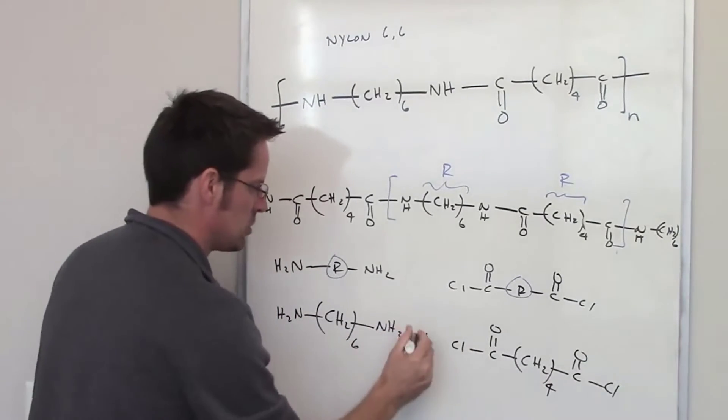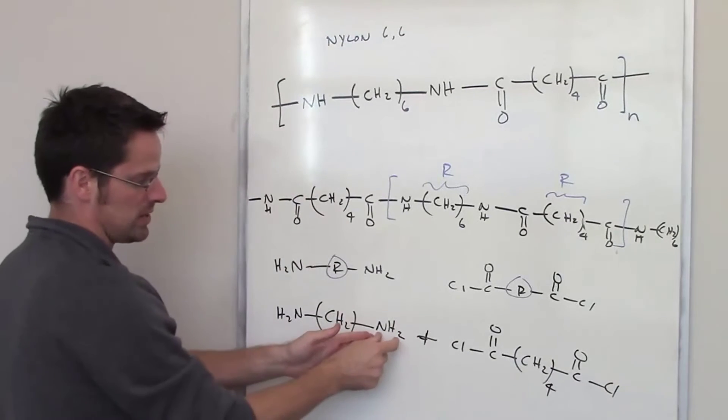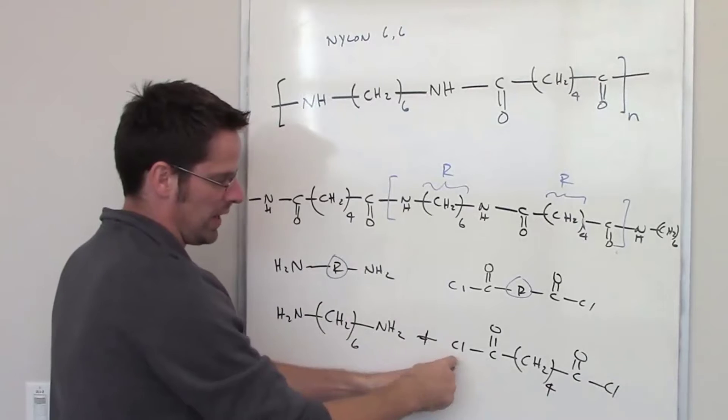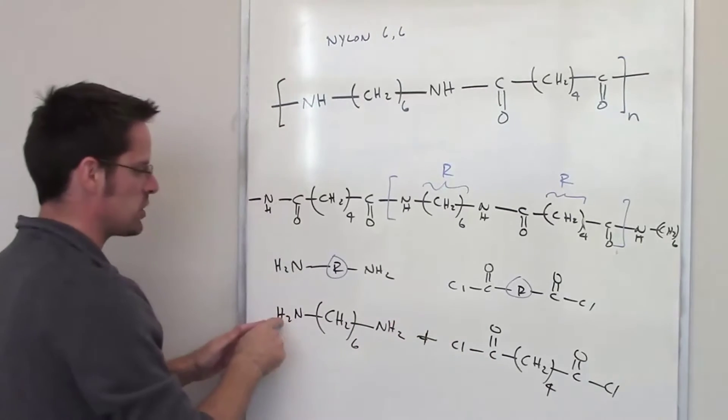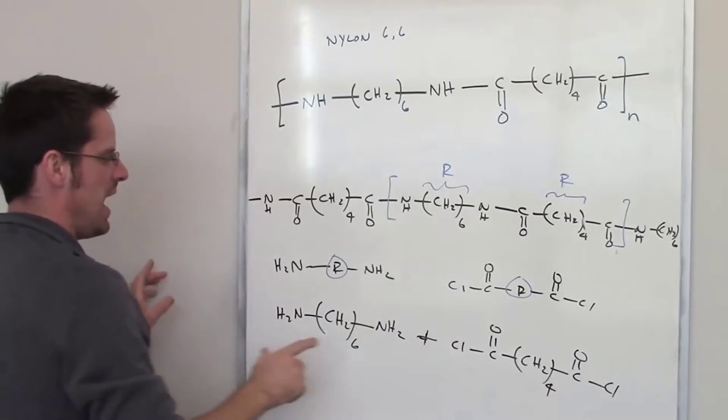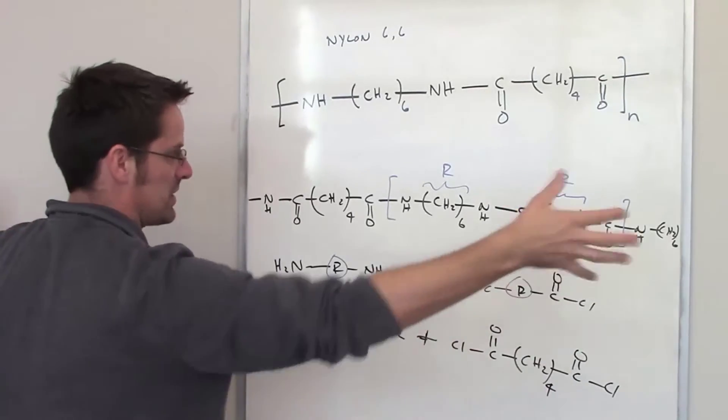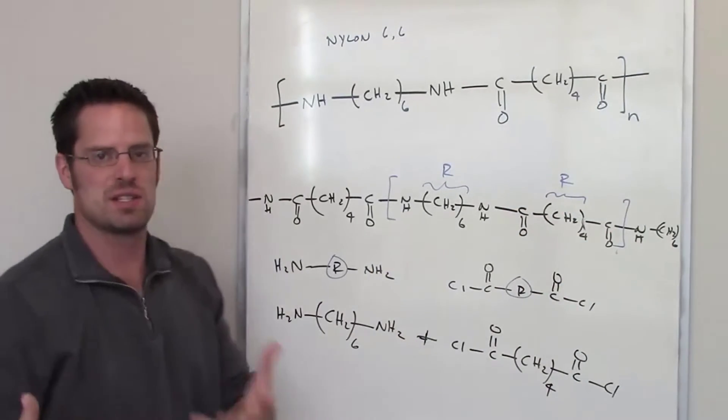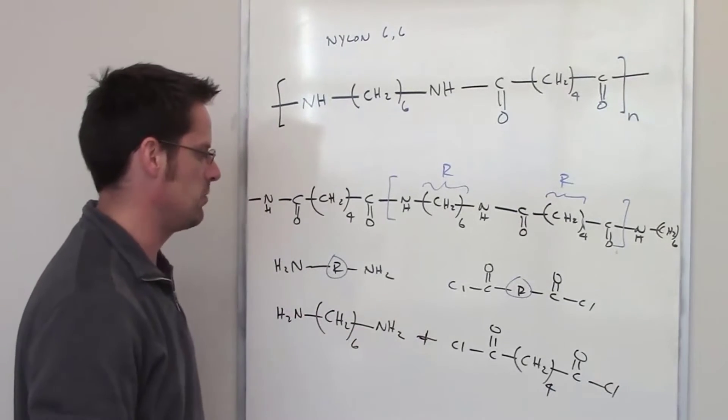So, if you did react these two molecules together, what would happen is an individual nitrogen, nitrogen on one side, would displace the chlorine from this diacid chloride and take its place. The nitrogen on the other side would displace another chlorine from another molecule of this, and then another diamine would do the same on both sides, and then et cetera, et cetera, for thousands or hundreds or maybe thousands of different repeats, and that would give us our final nylon.